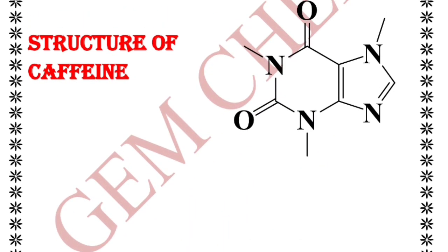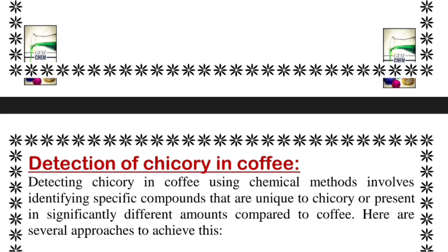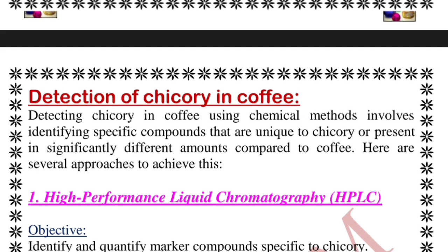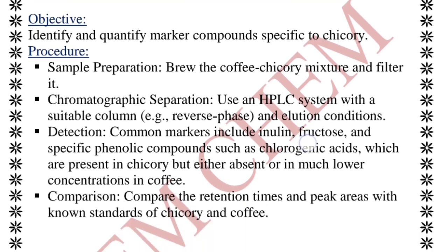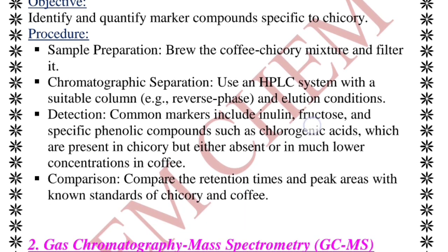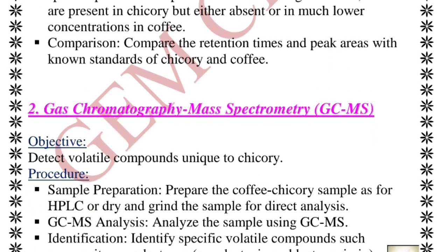This is the structure of caffeine, which is an important component of your syllabus. Moving to the next topic — detection of chicory in coffee — we are going to use specific chemical methods. The first is high performance liquid chromatography, where the same objective and procedure is described in the PDF.